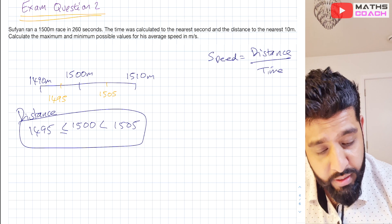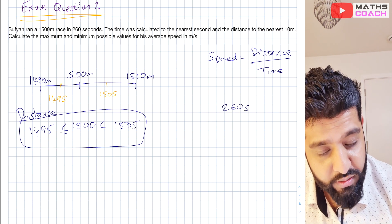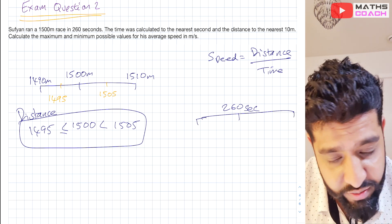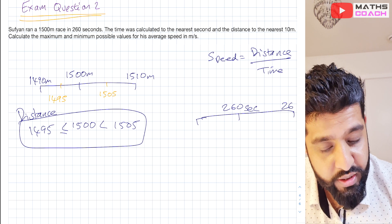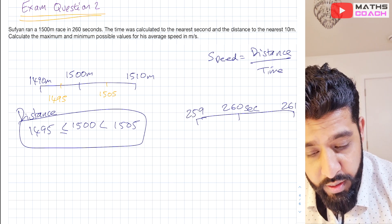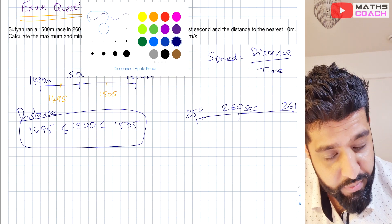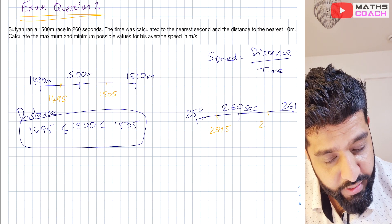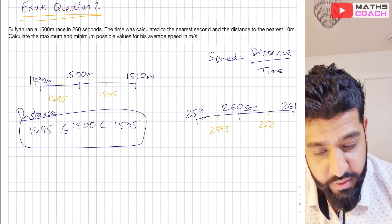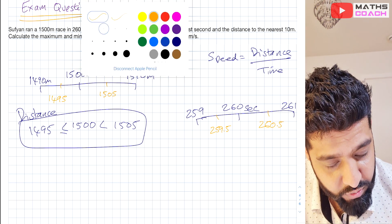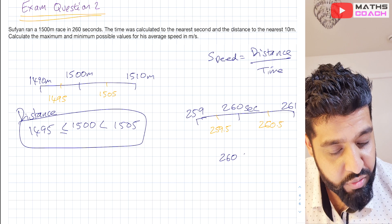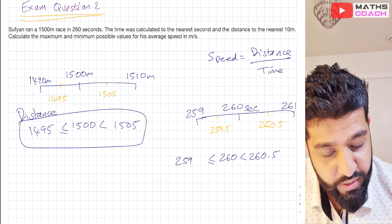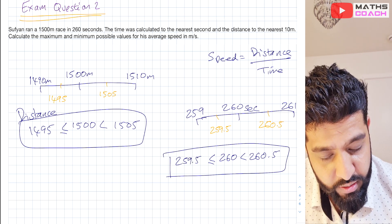For the time, 260 seconds has been rounded to the nearest second. That gives us 261 and 259 on either side. In between we have 259.5 and 260.5, so the error interval is 259.5 ≤ 260 < 260.5 seconds. And that is our time.